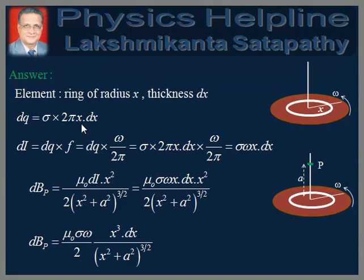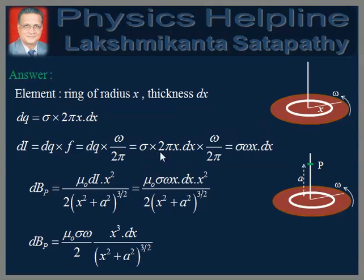The equivalent current of the rotating ring element is obtained by multiplying the charge with frequency. So di = dq × f, but f = ω/2π. Therefore di = dq × ω/2π. Putting the value of dq we get sigma × 2πx dx × ω/2π. The 2π cancels, giving di = sigma × ω × x dx.